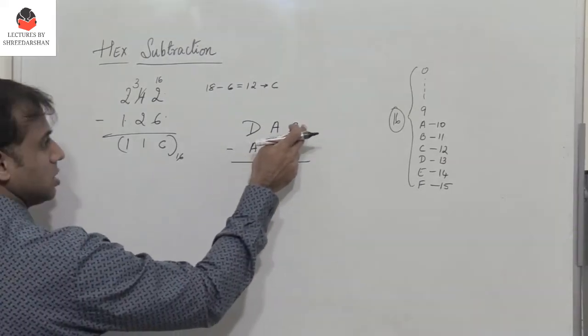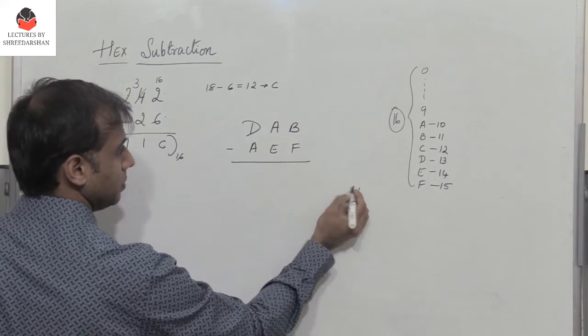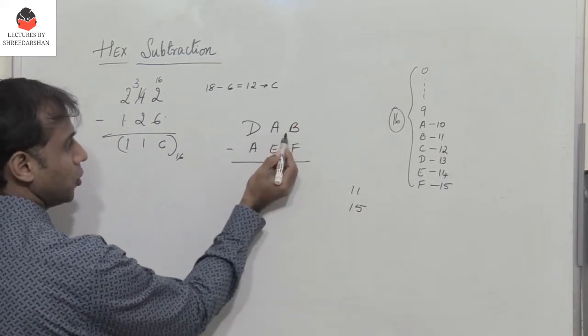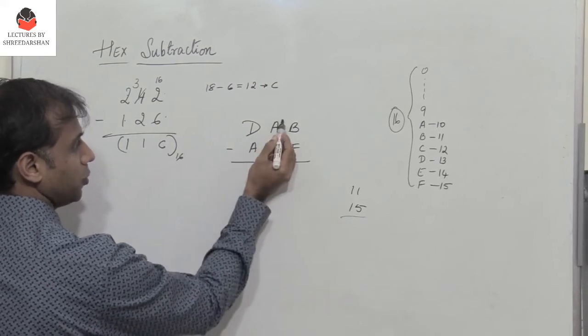B is 11, and F is 15. Therefore, I cannot subtract, so I need to borrow.